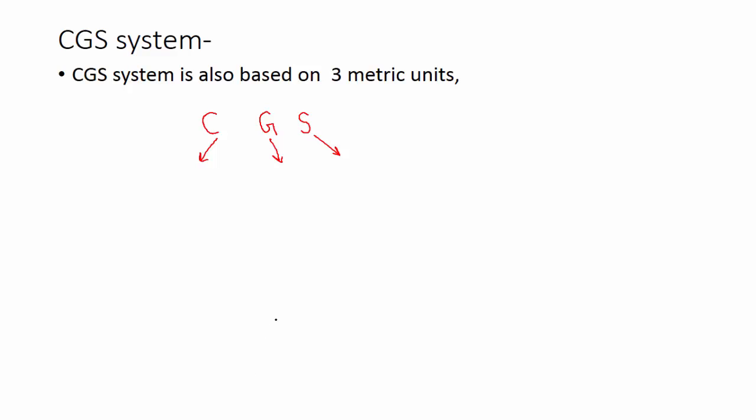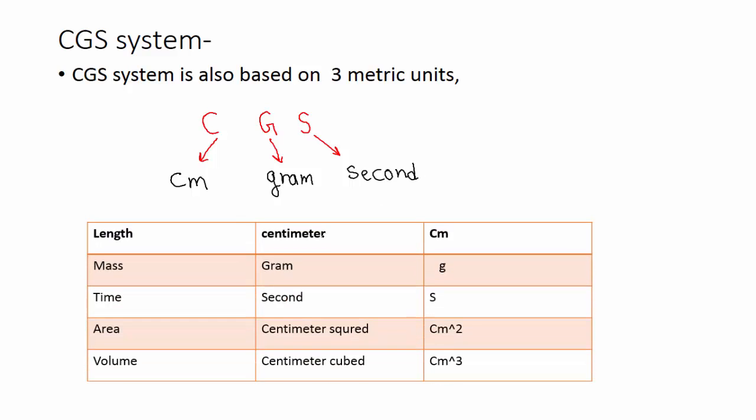Next system is CGS system. This system is used for small quantities. C for centimeters, G for gram, S for second. Here length is measured in centimeter, its symbol is cm.